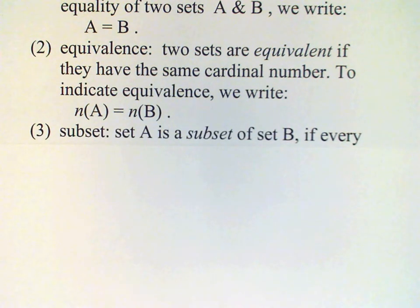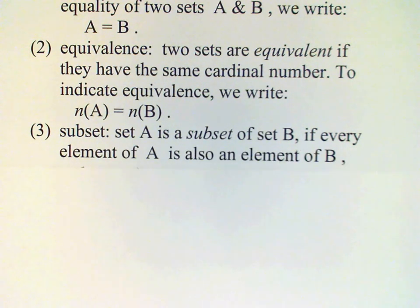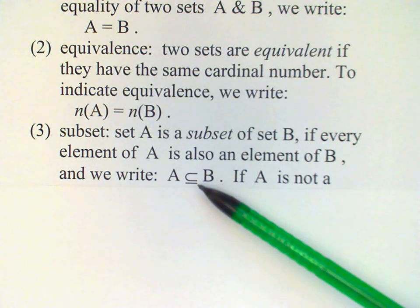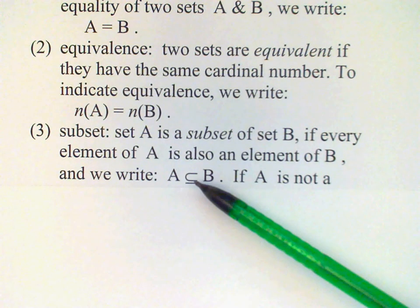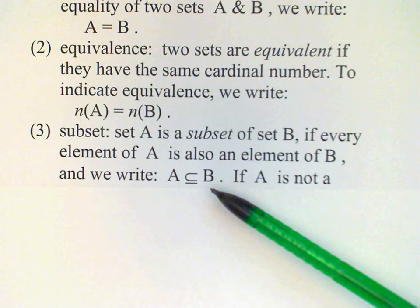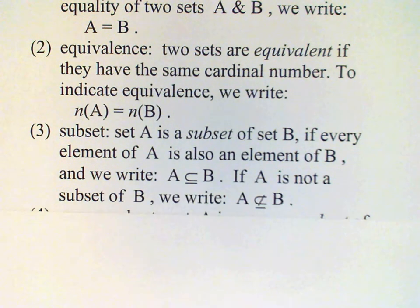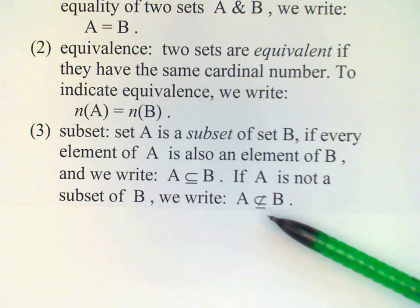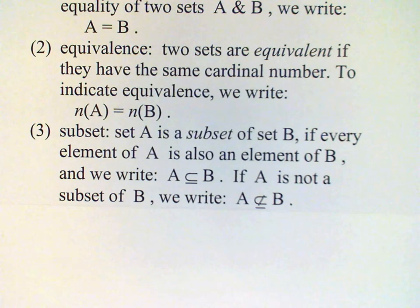Next concept, we will say that set A is a subset of set B if every element of A is also an element of B. And in this case, we'll write this symbol here to indicate that A is a subset of B. If A is not a subset of B, then we can write the same symbol but with a line through it and we read that as A is not a subset of B.